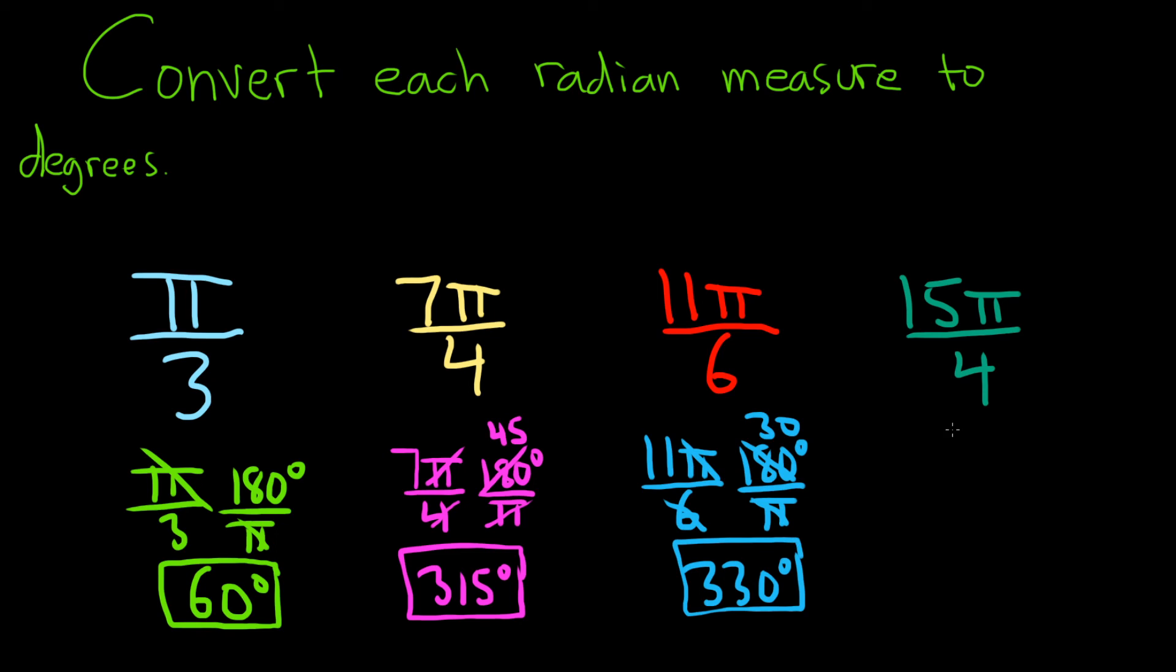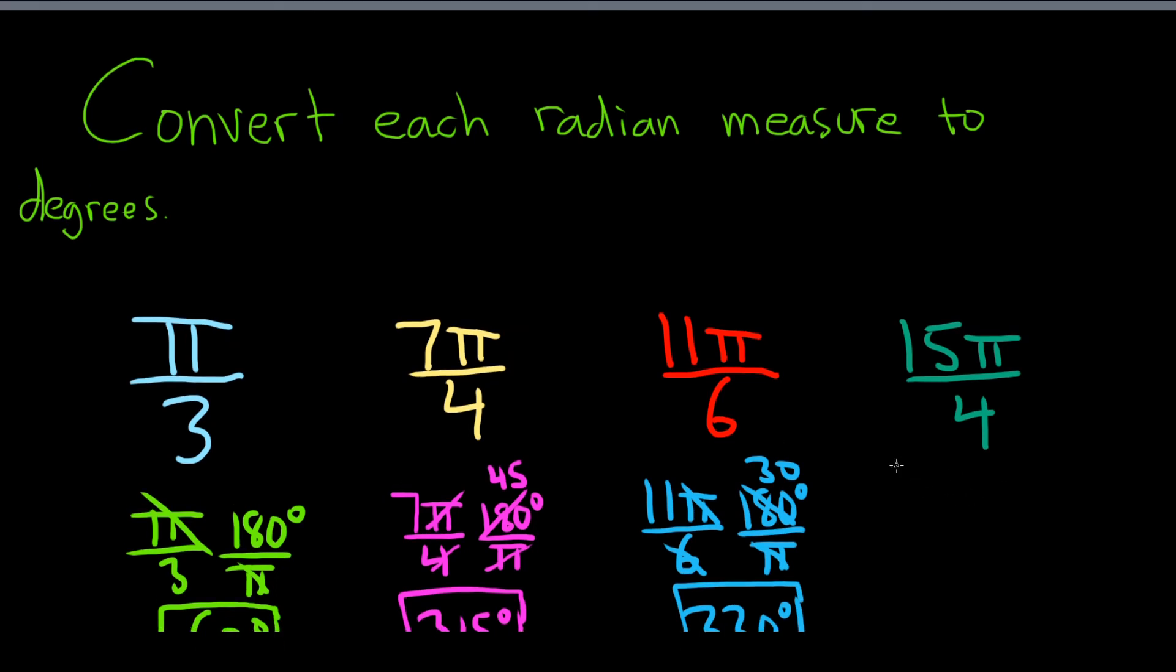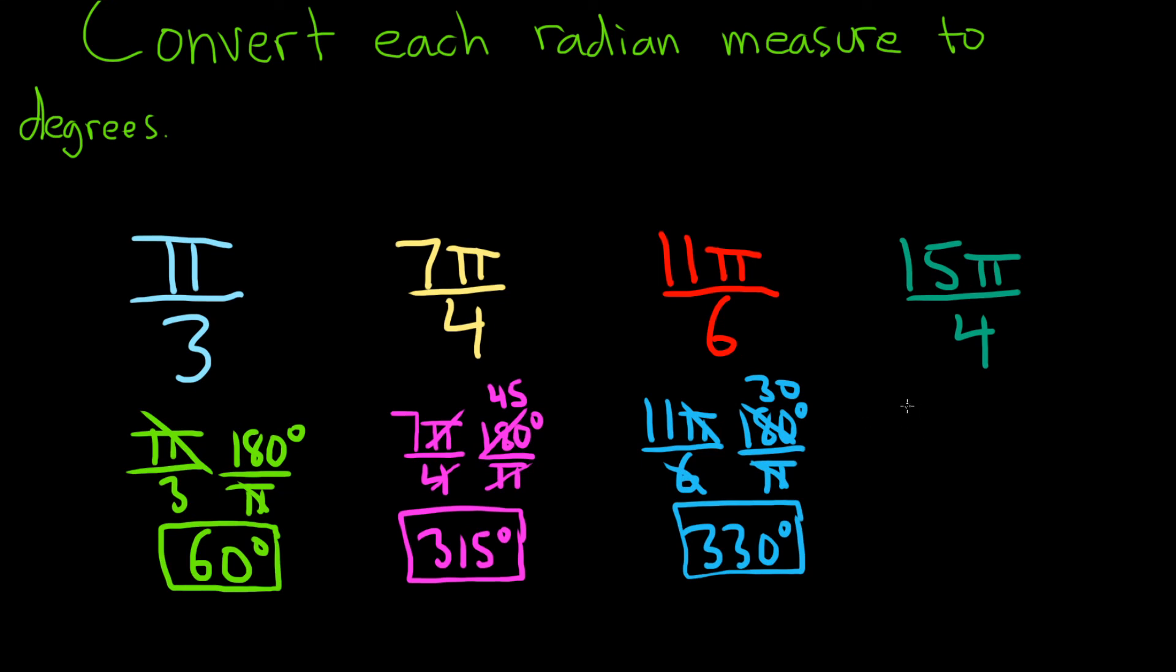And the last one is 15 pi over 4. And we're multiplying that by 180 over pi. The pi's cancel.